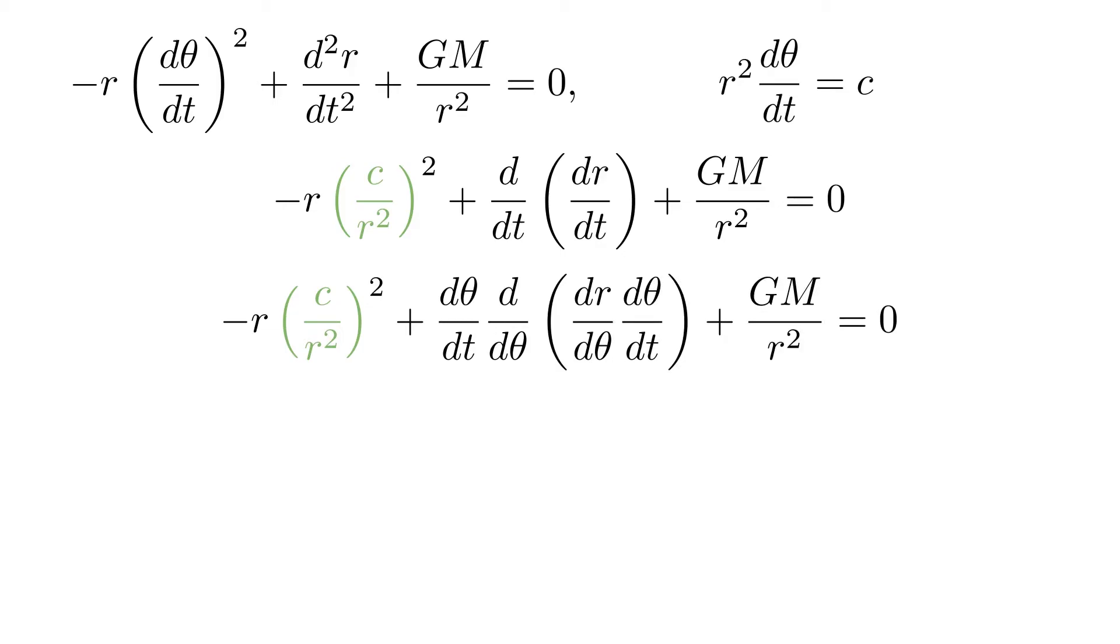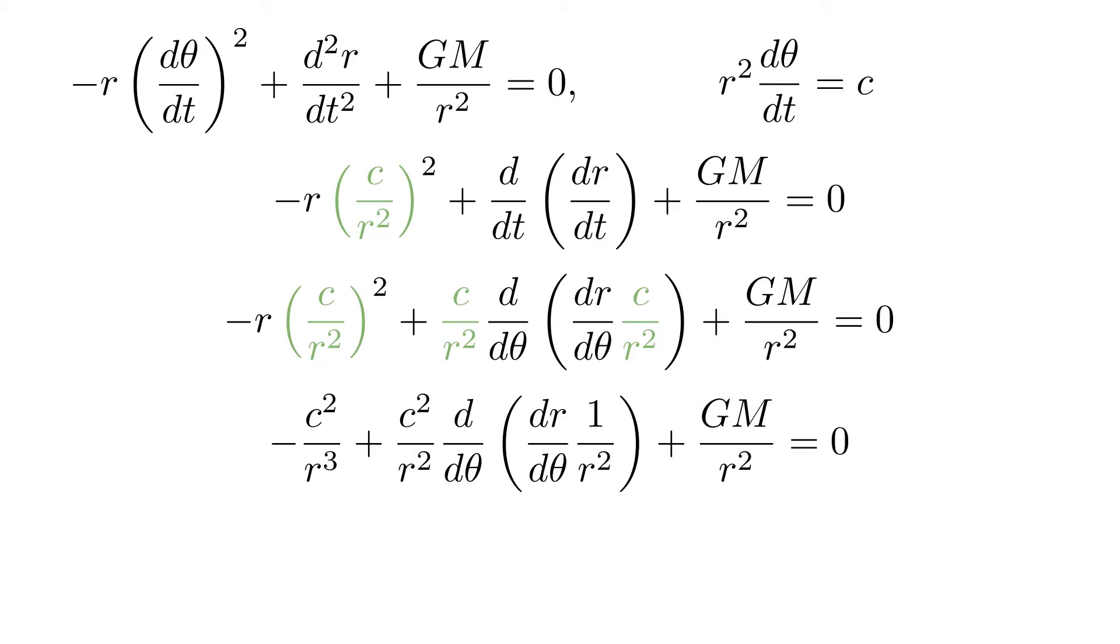After applying the chain rule, we can replace d theta dt as c over r squared to completely eliminate t. Simplifying, we get this expression.